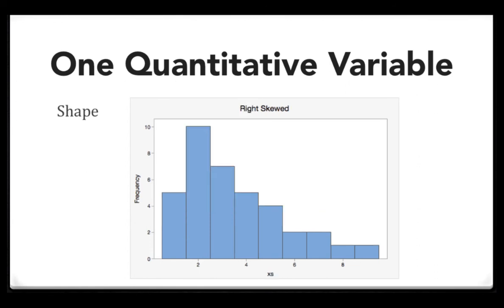This distribution is said to be skewed to the right. When we're talking about skewness, the direction of the skewness is the direction of the tail. A lot of students confuse right skewed and left skewed. In this right skewed distribution, we can see that there are more values on the left side with the tail pointing towards the right.